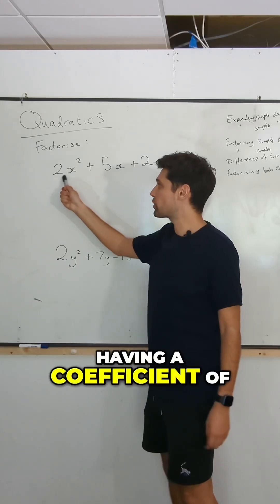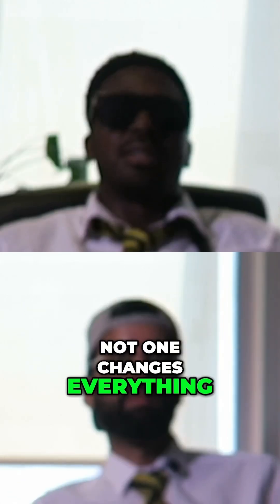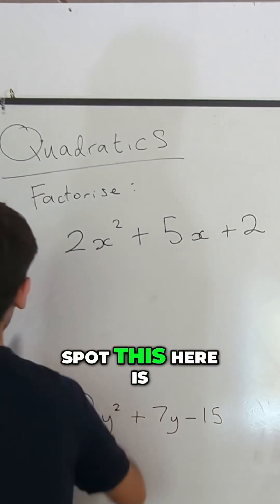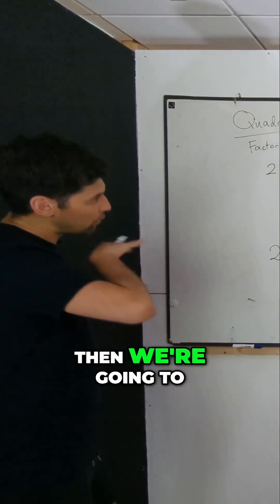Having this coefficient here, having a coefficient of x squared that is not 1, changes everything. So when you spot this, here is what we do. I'm going to show you this process, obviously that is my job, and then we're going to run with it.